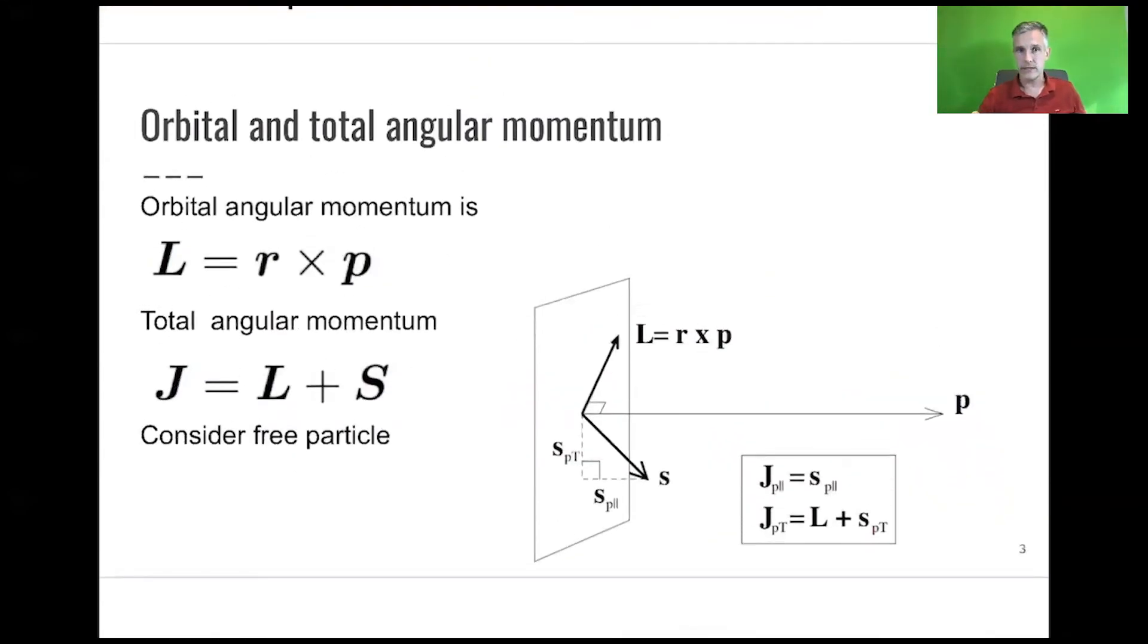Let me motivate this. If you look at the orbital angular momentum of a particle, that's given by r cross p, where p is the momentum vector of the particle. If you're looking at the total momentum, we have to add the angular momentum and the spin of the particle together.